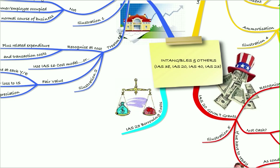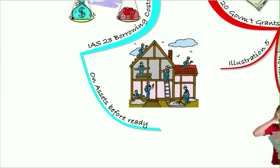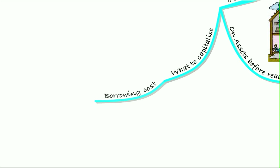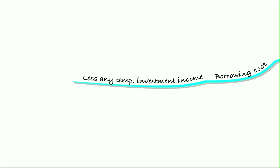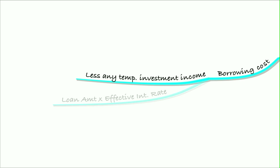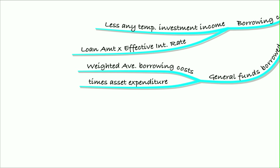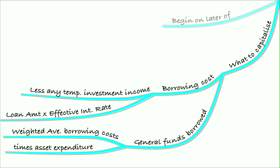The last standard we looked at was IAS 23 — borrowing costs. This is the interest cost we have on an asset we're building before it's ready. We can capitalize the interest cost. What do we capitalize? The borrowing cost less any temporary investment income. If we borrowed money and didn't use all of it straight away, so we invested some of it, we need to net off any investment income received. If we borrowed general funds, we take the weighted average of our borrowing cost and multiply that by the asset expenditure, but we can't capitalize more than the total borrowing cost.